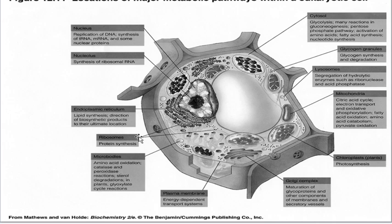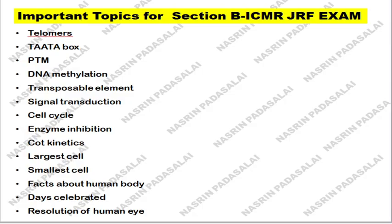Next, know about the location of major metabolic pathways — refer to a diagram: where does protein synthesis occur in the ribosome, where does photosynthesis occur, where does fatty acid oxidation occur. Draw this diagram in your reference notebook and study it. Next, know about telomeres, TATA box, post-translational modifications, DNA methylation, transposable elements, signal transduction, cell communication, enzyme inhibition, enzyme kinetics, and which is the largest cell and smallest cell in the human body.